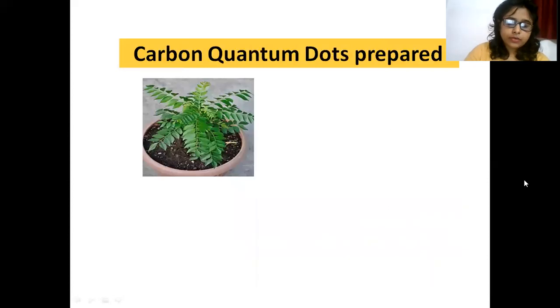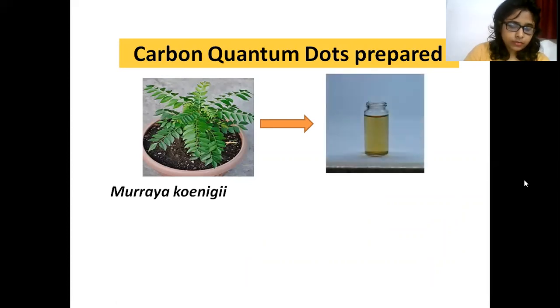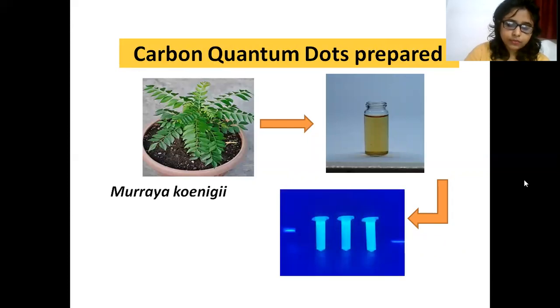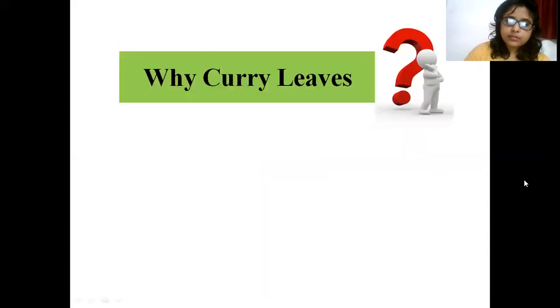I have prepared Carbon Quantum Dots using curry leaves. It was aqueous medium solution kept under high temperature and pressure for six hours in Muffle furnace. After the reaction, I obtained a brown colored solution. Blue fluorescence obtained under UV rays. Blue fluorescence indicates formation of carbon dots and its small size.